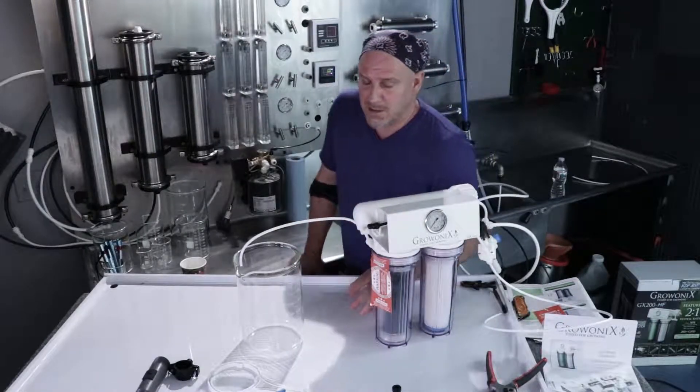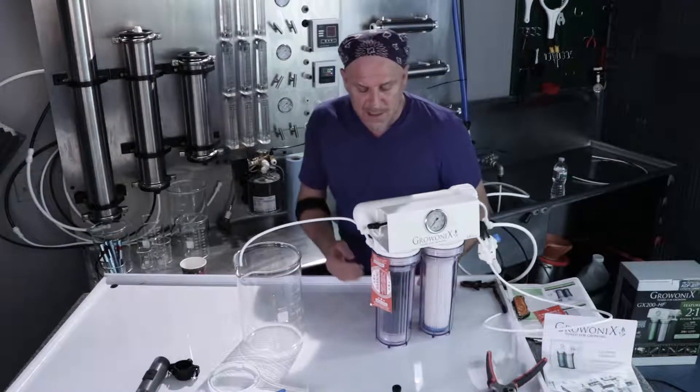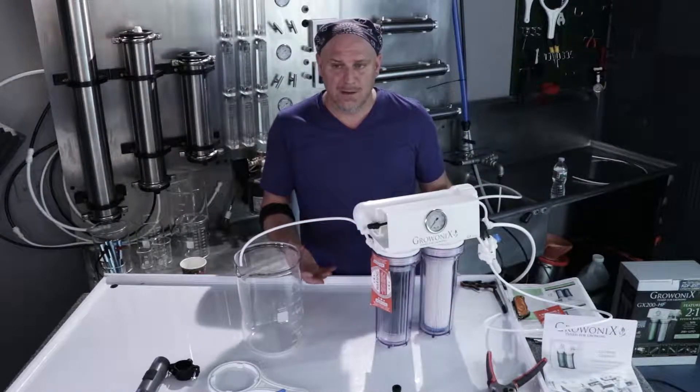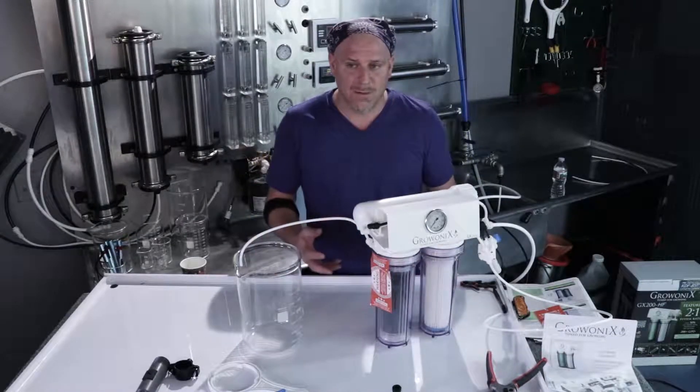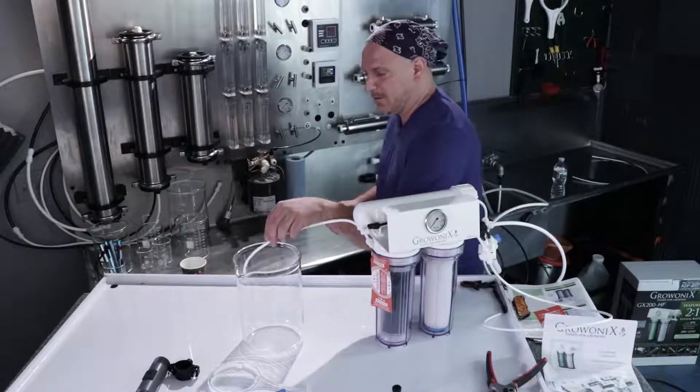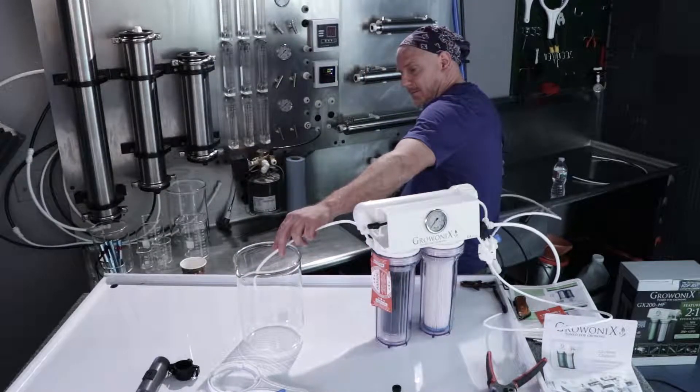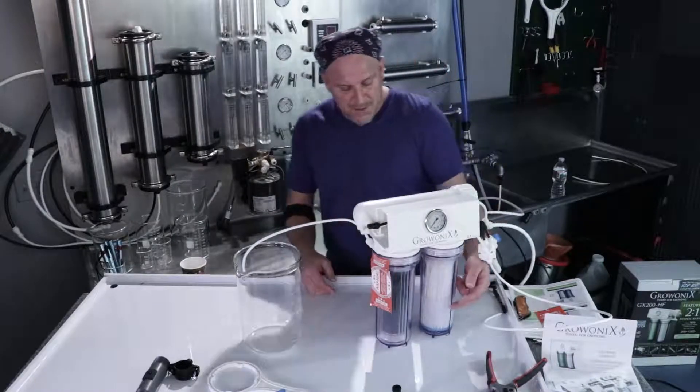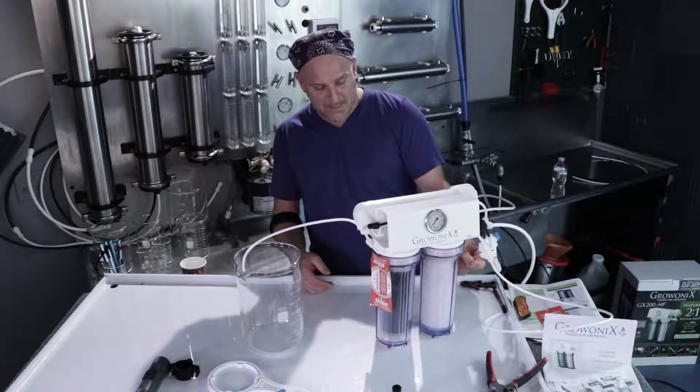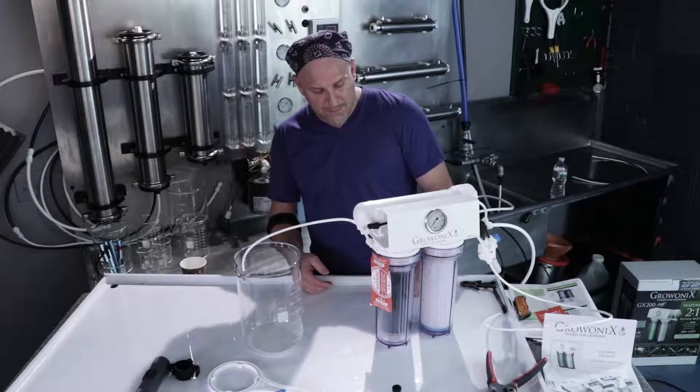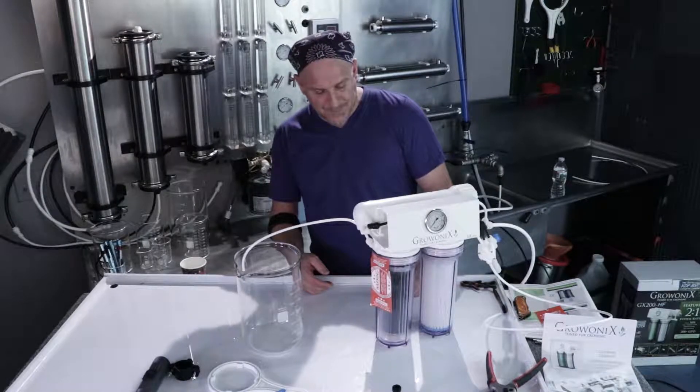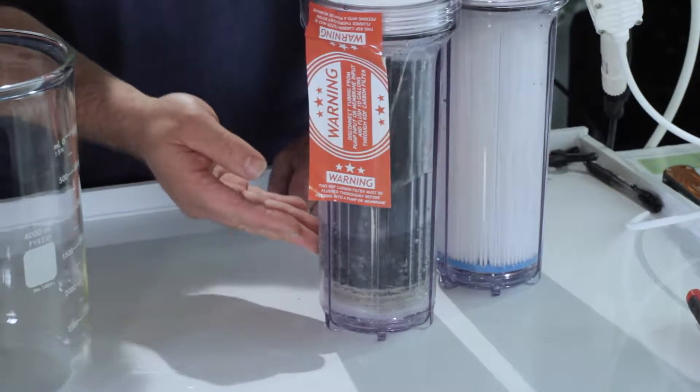We're going to turn the feed water on slowly. Don't blast it. There's a lot of air bubbles in here. We want to bleed out the air and the carbon dust, and if you slam it with water pressure, you could cause a little havoc. So we're going to slowly turn on the input feed water, and you can visually see the water filling up. We're through the sediment filter now, now it's coming up through the carbon filter.